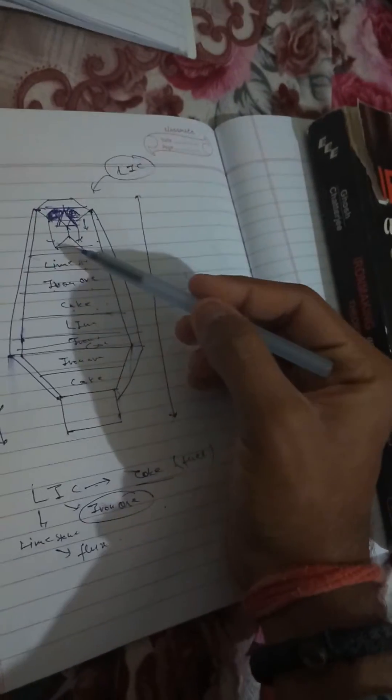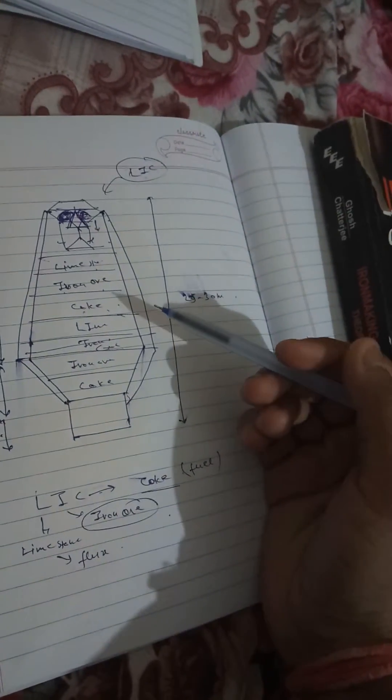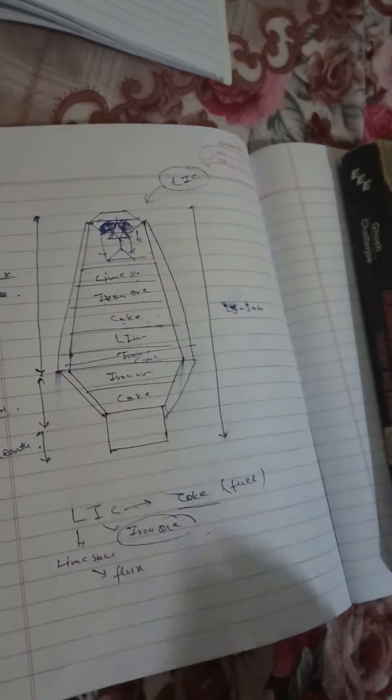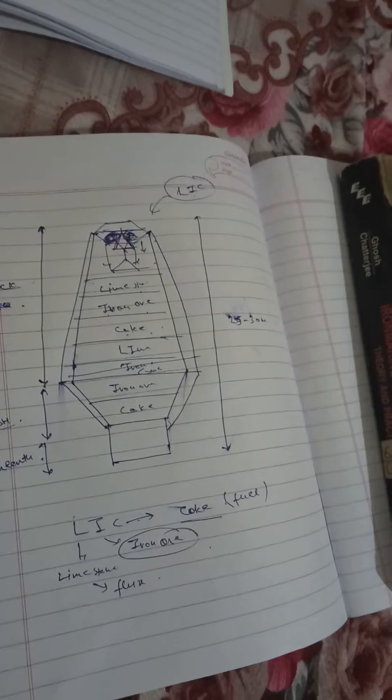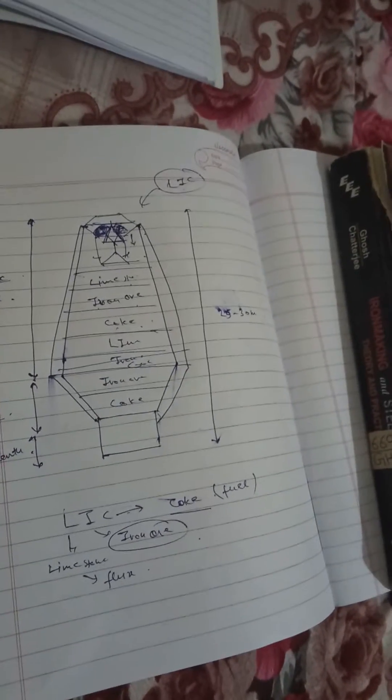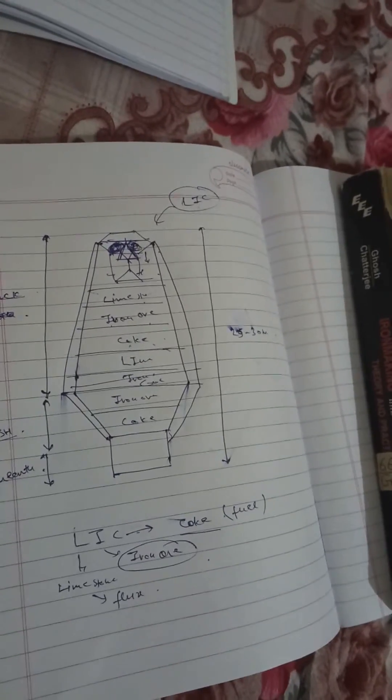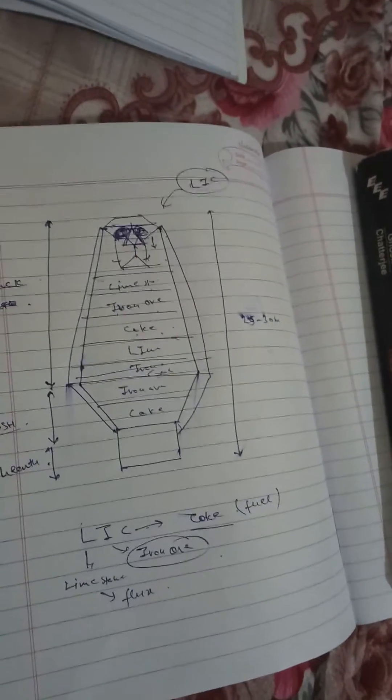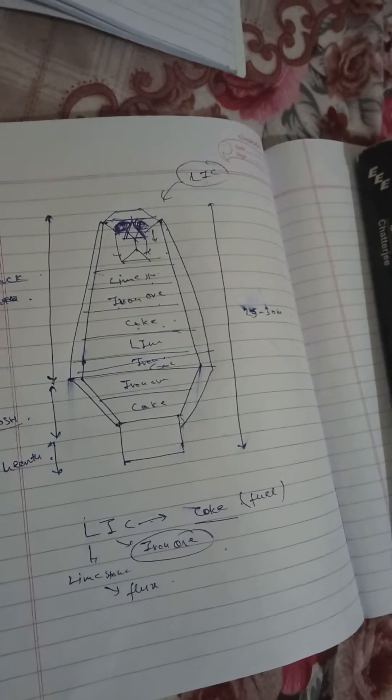The stack has equal proportions of limestone, iron, and coke, divided by further subsequent layers. The iron, coke, and limestone react in certain proportions. Coke, ore, and limestone in alternate layers settle.